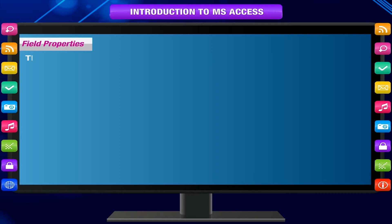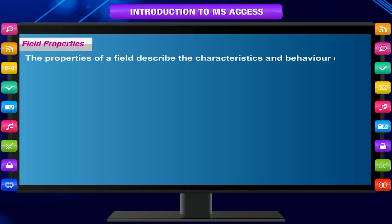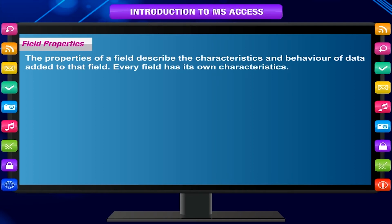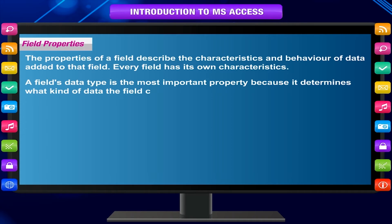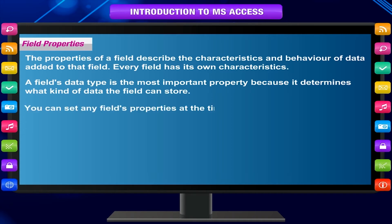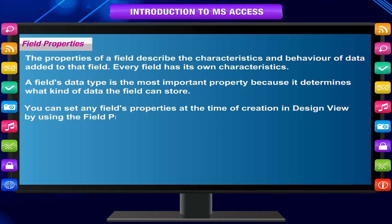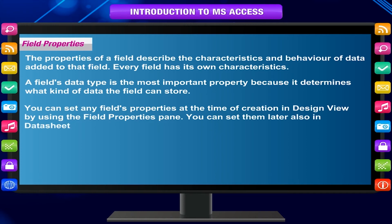The properties of a field describe the characteristics and behaviour of data added to that field. Every field has its own characteristics. A field's data type is the most important property because it determines what kind of data the field can store. You can set any field's properties at the time of creation in design view by using the field properties pane, or you can set them later in datasheet view.